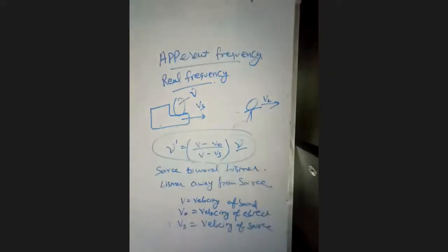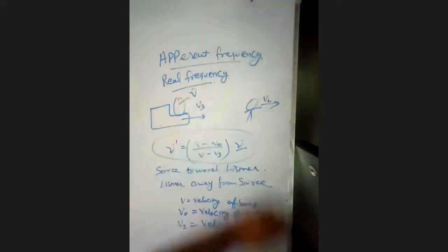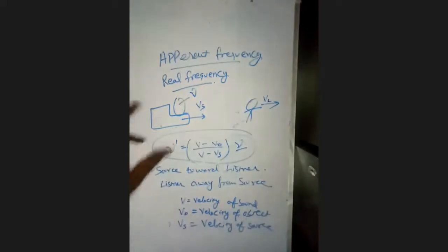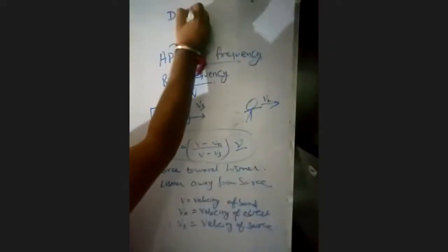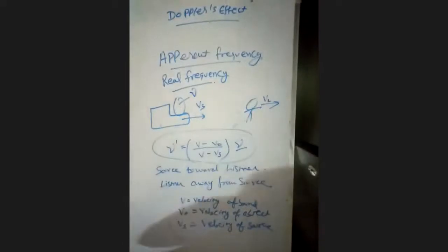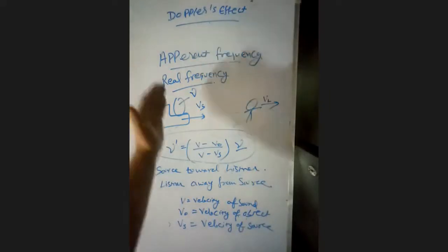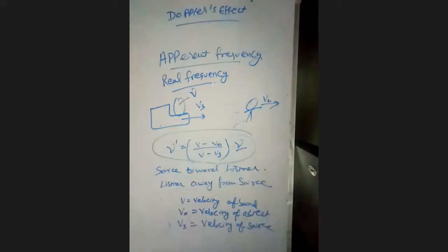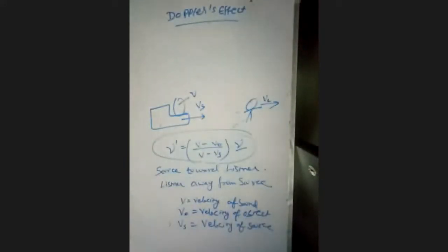In this session we are going to discuss apparent frequency and real frequency. This concept is found in the Doppler effect — a very important topic. We will discuss what apparent frequency and real frequency are, and we will take an example to understand this.